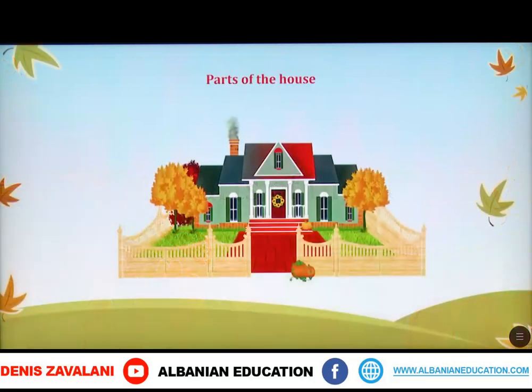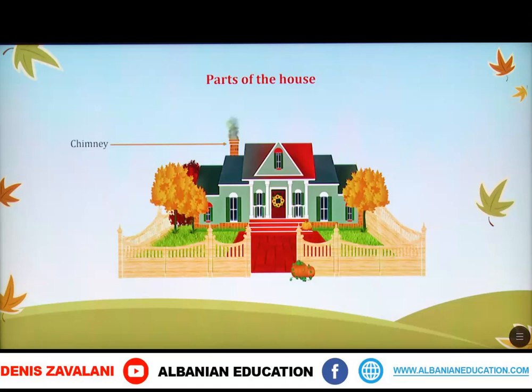Here, as you see, we have a house. First, we are going to see the chimney. The chimney is here. Next, we have the roof. Këtu kemi kulmin.